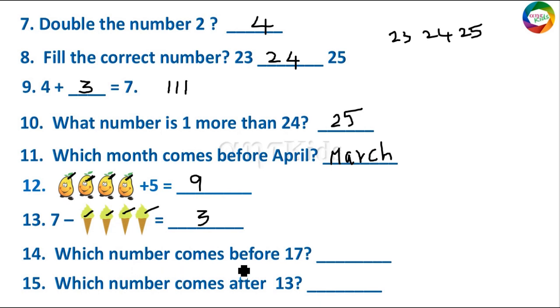Which number comes before 17? Before 17 is 16. And then which number comes after 13? After 13 is 14.